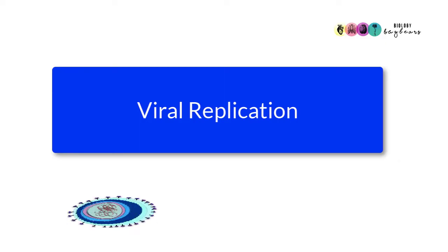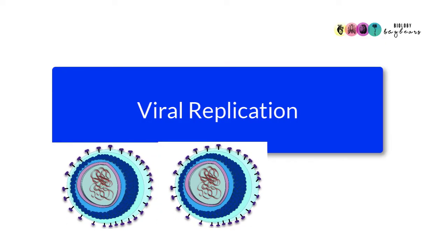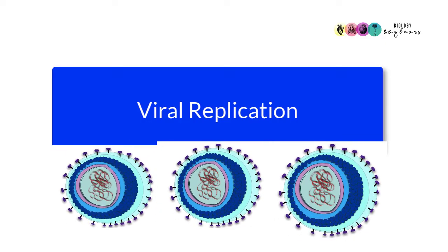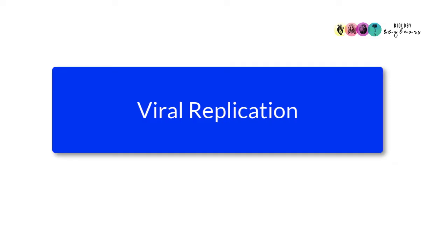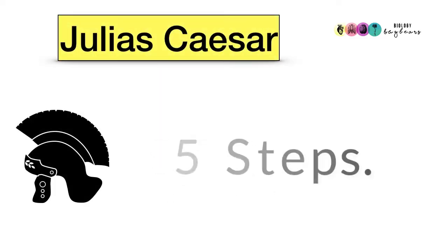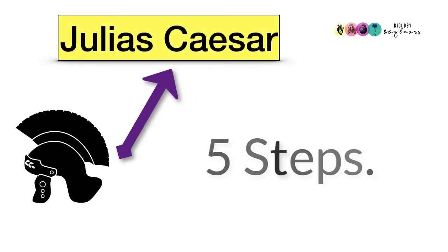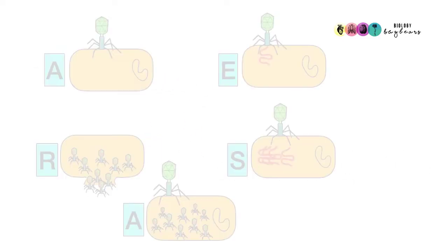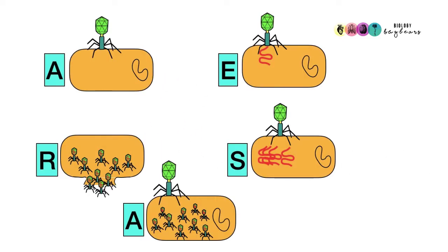Now we have to discuss viral replication—how one virus will give rise to many others. Viral replication takes place in five steps, and the easiest way to remember the five steps and the sequence in which they take place is to think of the Roman Emperor Julius Caesar and just remove the C of his last name. So let's go through those five stages in viral replication. Just look at this diagram—you can see it's a bacteriophage infecting a bacterium.